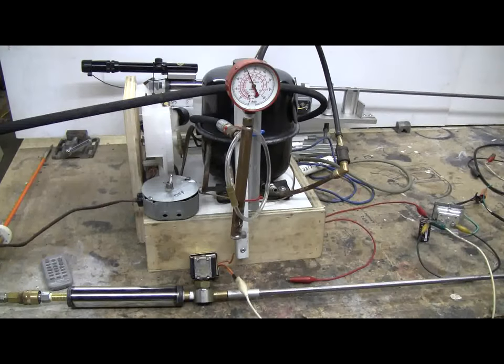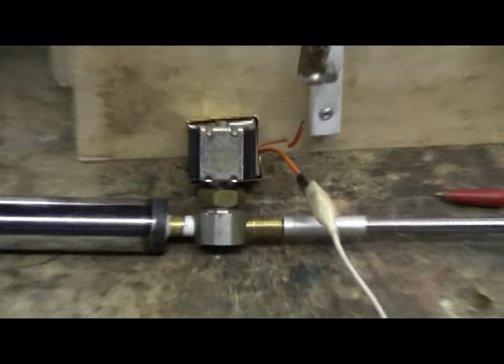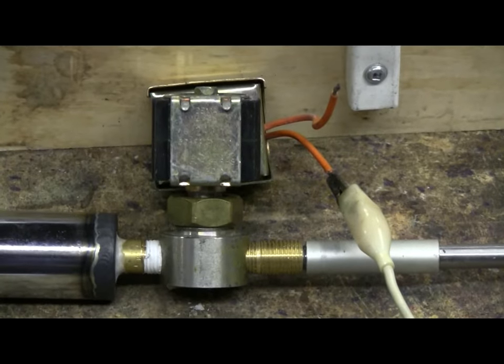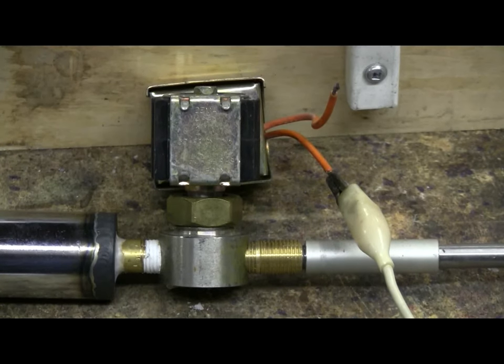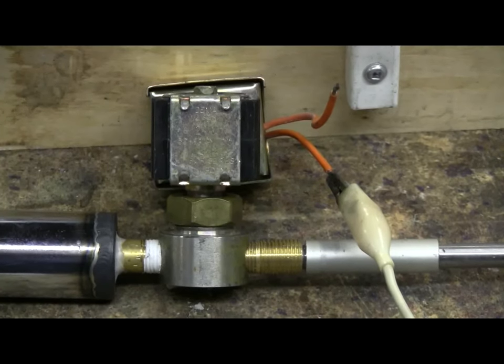So the solution to getting these little quarter NPT 24 volt solenoid valves, such as this one, to fire at pressures above 200 pounds or so, is to operate them using a simple DC supply attached to your 24 volt transformer. Hopefully this little bit of information helps a few fellow air cannon experimenters.